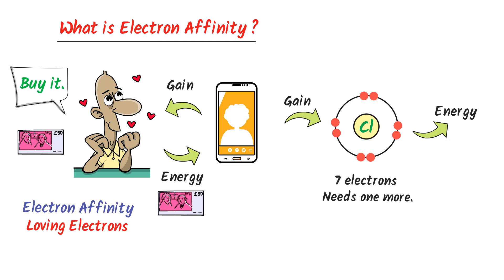So we say that chlorine loves electron. In order to gain an electron, chlorine has to lose energy. Thus we learn that when an atom gains an electron, it loses energy. This lost energy is known as electron affinity.